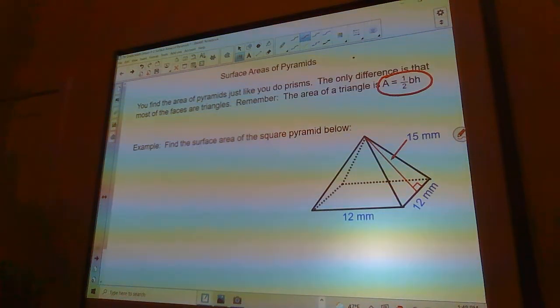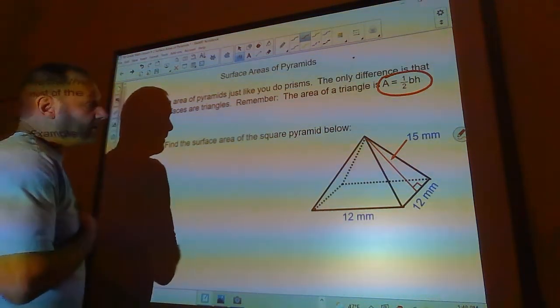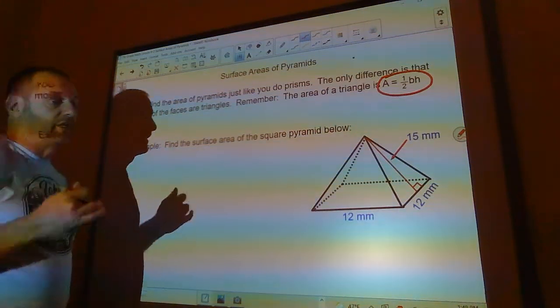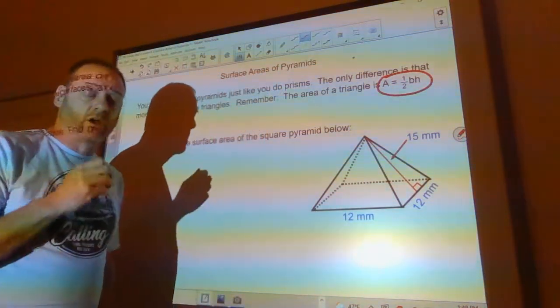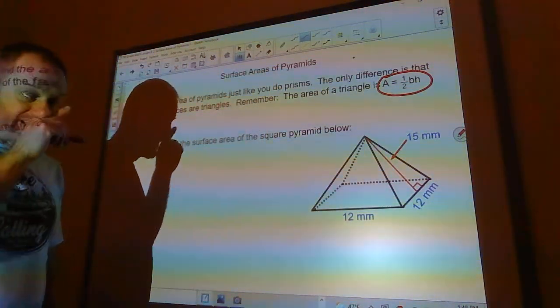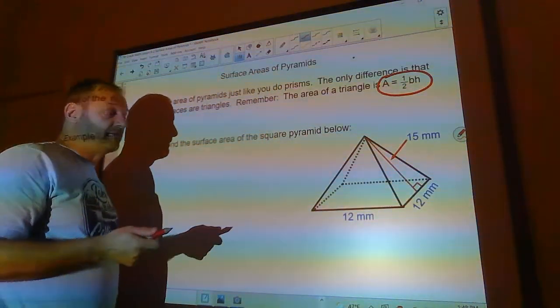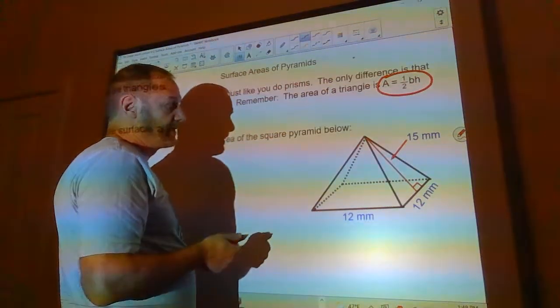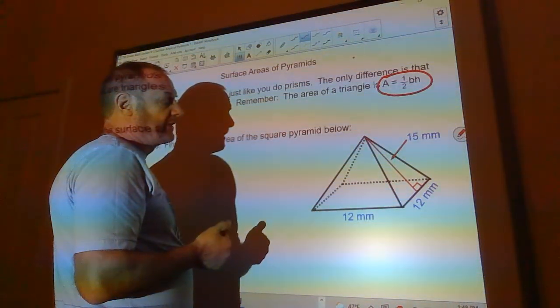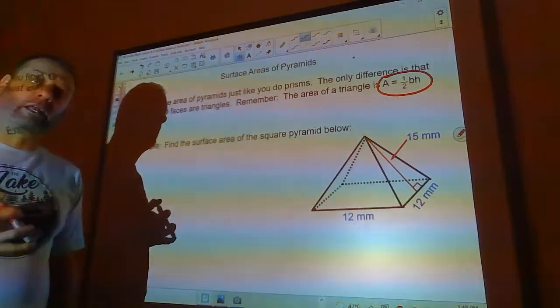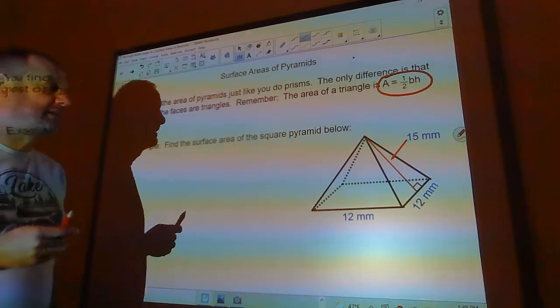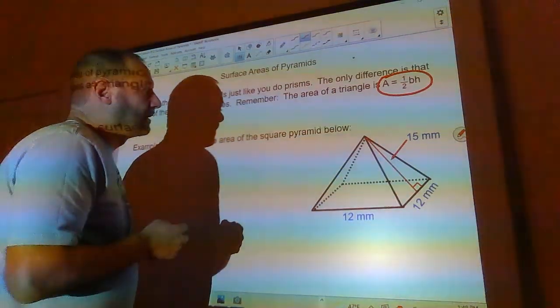Remember, you always name the pyramid by whatever the shape of the base is, so in this case it's a square. Now one of the things you're going to assume is that the lateral faces that are triangles are all the same. They could be different depending on the pyramid, but if I do that I have to give you a different height for each one, and then the picture gets so crowded you can't see anything or figure out what you're doing.